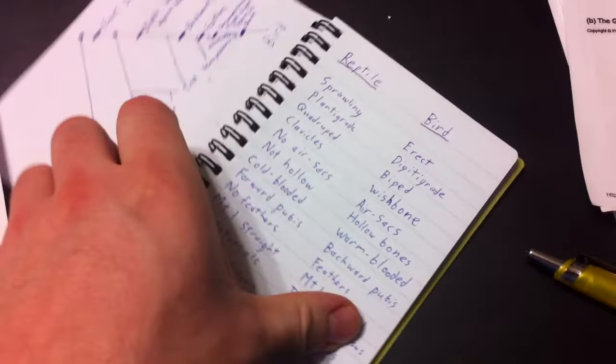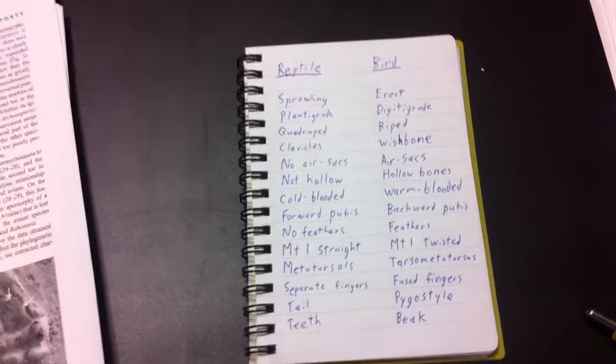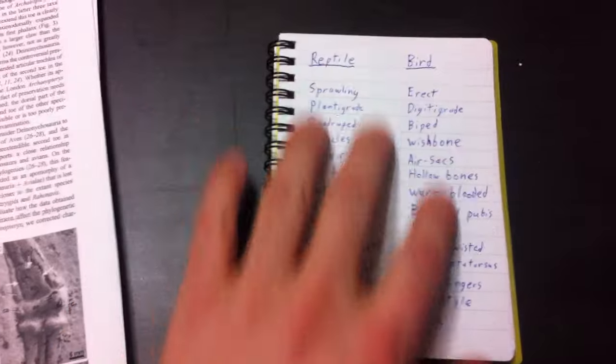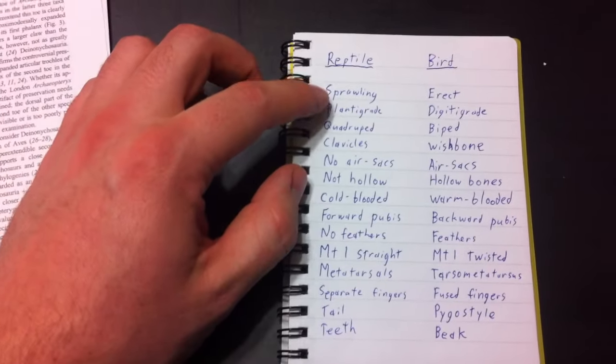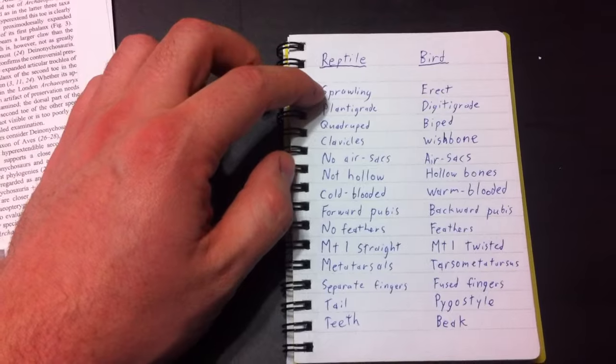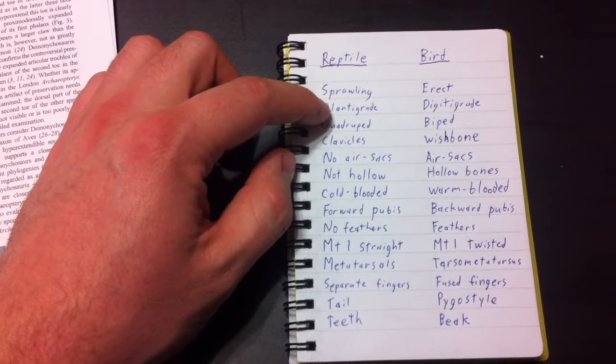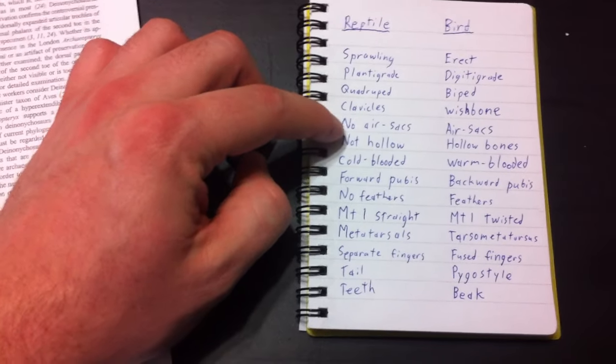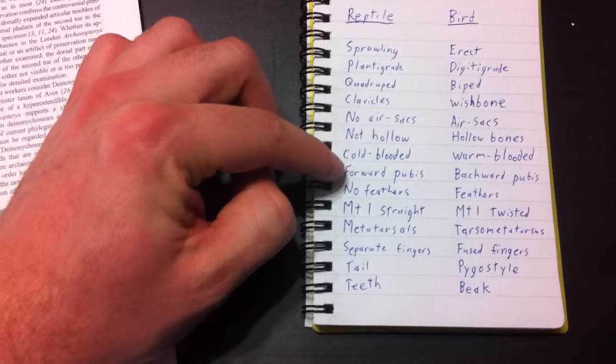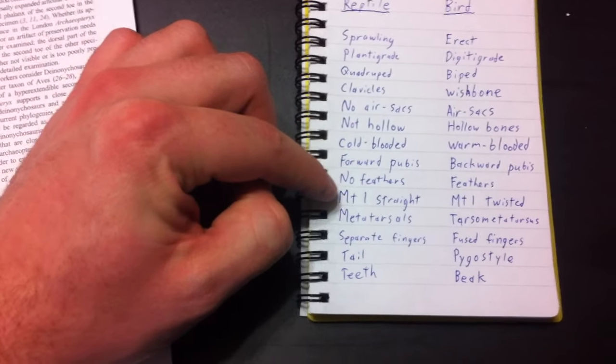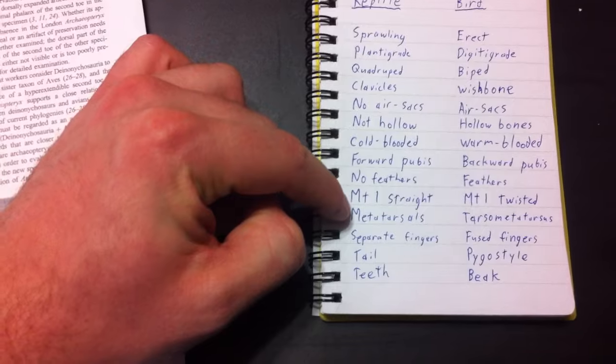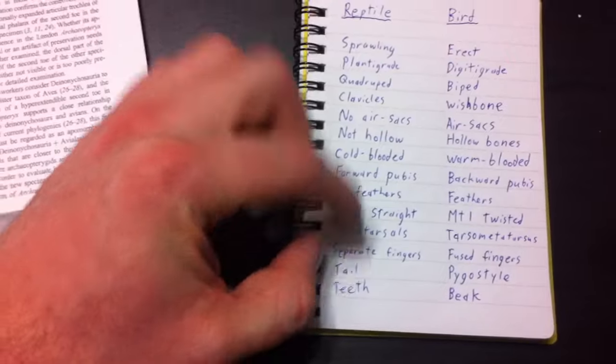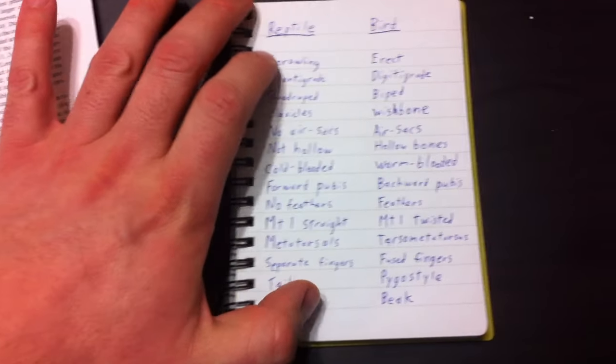We can list many features that distinguish reptiles from birds. We can put any modern reptile next to any modern bird and come up with a long list of differences. So reptiles are generally sprawling. Their legs go out sideways from their body. They're plantigrade. They walk on their heels. They're quadrupeds. They have clavicles. They have no air sacs. Their bones are not hollow. They're cold-blooded. Their pubis faces forward. They have no feathers. There's no twist in their first metatarsal. Their metatarsals are separate, not fused. Their fingers are separate. They have a tail, and they have teeth. I'm sure you can think of many other features that distinguish birds from reptiles.